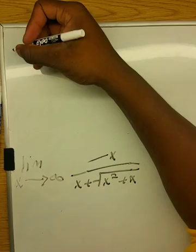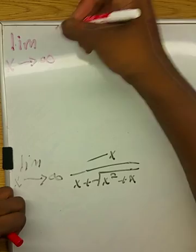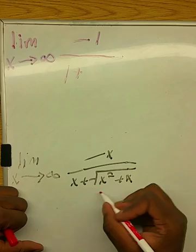So the limit as x approaches infinity of negative 1, because that's the derivative of negative x over 1 plus, now this derivative is 1 and half.